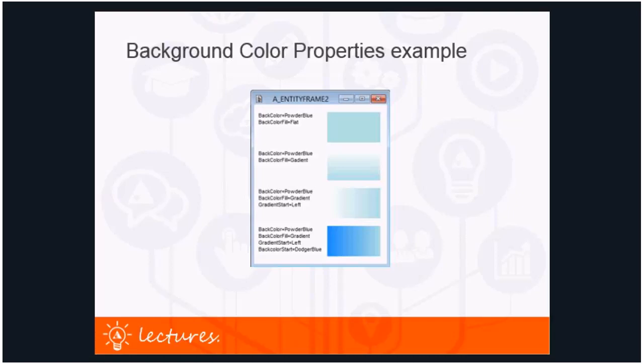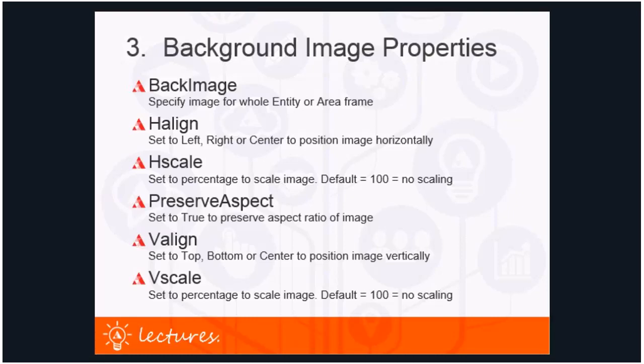The third group is the background image properties. Back image: you can specify an image displayed as the background for the whole entity or area frame — this is not per occurrence. H align: set to left, right, or center to position the image horizontally. H scale: set to a percentage to scale the image; default is 100 meaning no scaling. Preserve aspect: set to true to preserve the aspect ratio; default is false. V align: set to top, bottom, or center to position the image vertically. V scale: set to a percentage; default is 100.